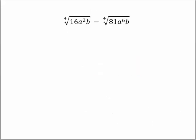Let's try another one. Here we have a lot to go through. We want the 4th root. We'll rewrite this: that's 2 to the 4th, a squared, and b.